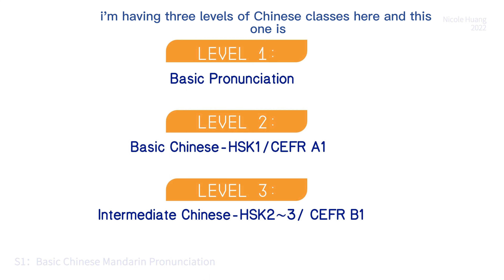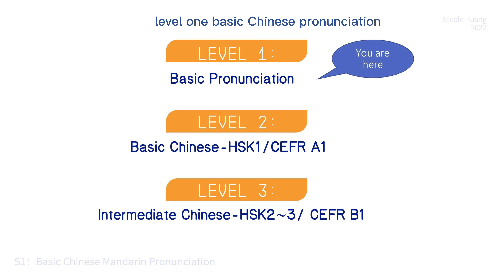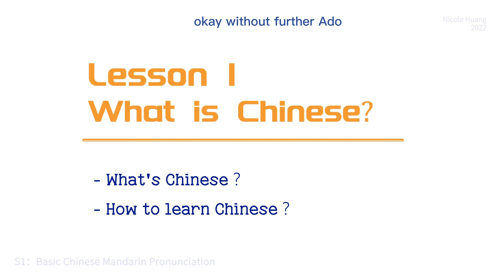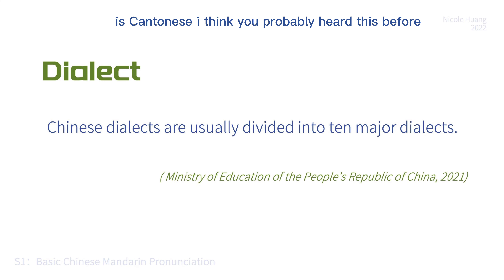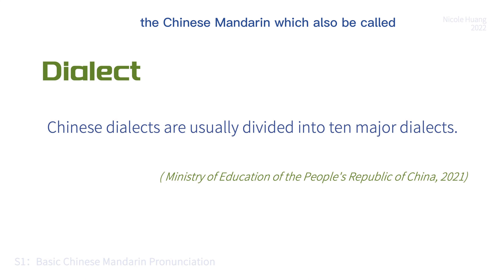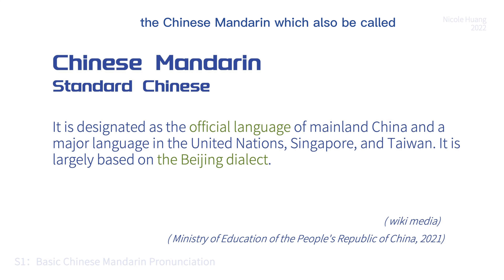I'm having three levels of Chinese classes here, and this one is Level 1: Basic Chinese Pronunciation. Without further ado, let's see what Chinese is and how to learn it. Firstly, in China we have many dialects — one of the most famous ones is Cantonese, which you've probably heard before. The Chinese Mandarin, also called Standard Chinese, is based on the Beijing dialect.